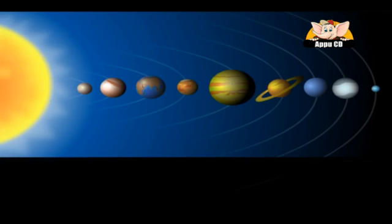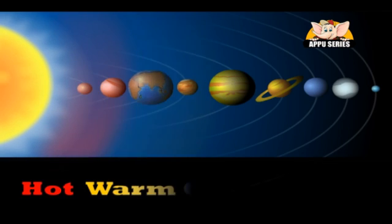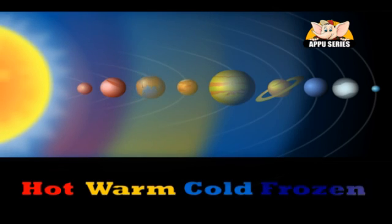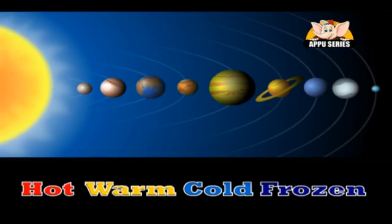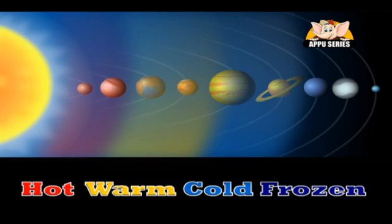The temperature on Earth is just about right for life, and this is because Earth is the third planet from the Sun, not too far, not too close. The temperature is too cold in other planets which are far from the Sun, and too hot in planets which are close to the Sun.